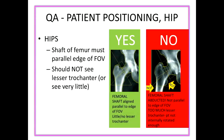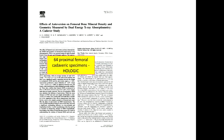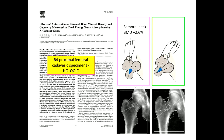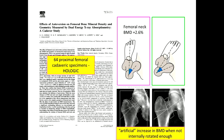Here's an example of an improperly positioned hip showing inadequate internal rotation and hip abduction. Proper hip positioning is so important — a study showed differences in measured bone mineral density in a cadaver which were affected by differences in hip positioning.